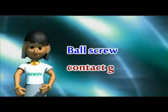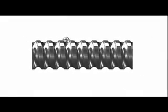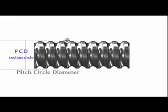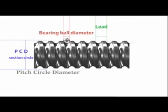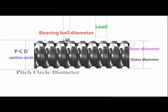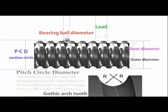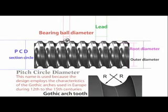Now we will introduce the contact geometry of ball screws. Pitch circle diameter is the diameter of the circle formed by the central diameter of ball screws' upper and lower ball bearings. The lead is the distance traveled by the nut when the screw turns one rotation. The bearing ball diameter. The root diameter is the smallest diameter of the threads. The outer diameter, also known as the nominal outer diameter, is the largest diameter of the threads. A gothic arched tooth design has two identical radii and an offset center.